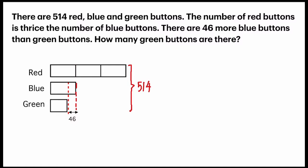How do I solve the question — how many green buttons are there? I'm finding this smaller block. So 514 equals 1 unit, 2 units, 3 units, 4 units. But the last one is slightly smaller than 1 unit. If we add that 46 — this blue little part — into the green portion, we will have the 5th unit from green.